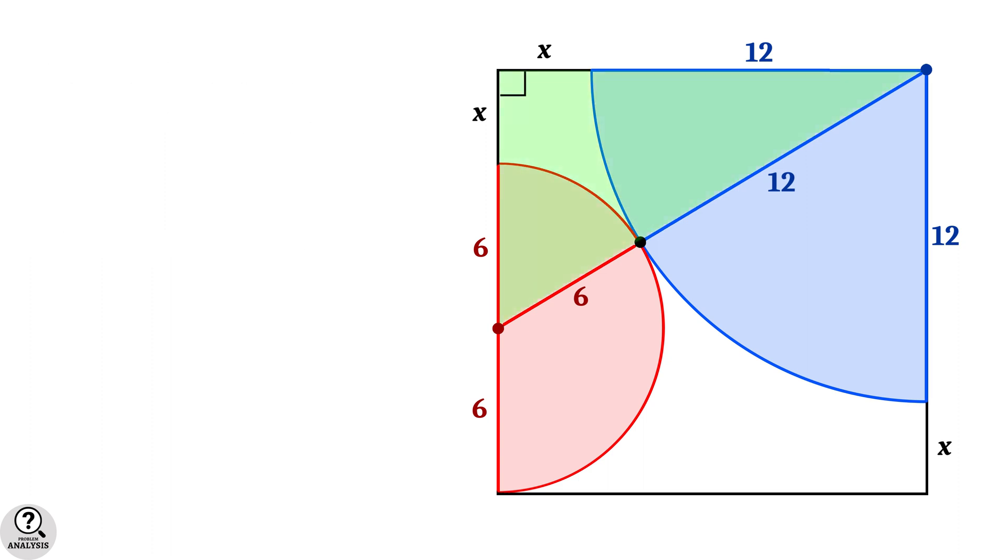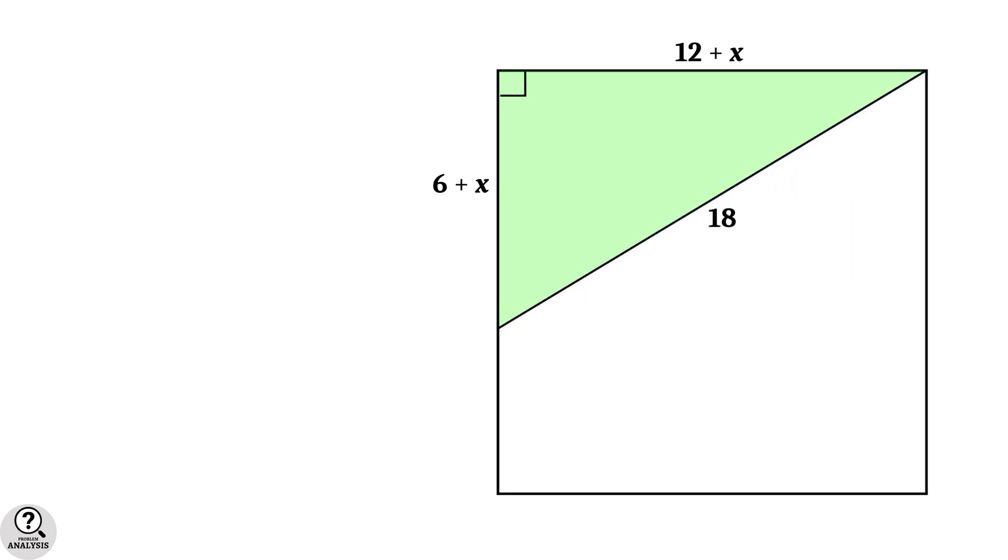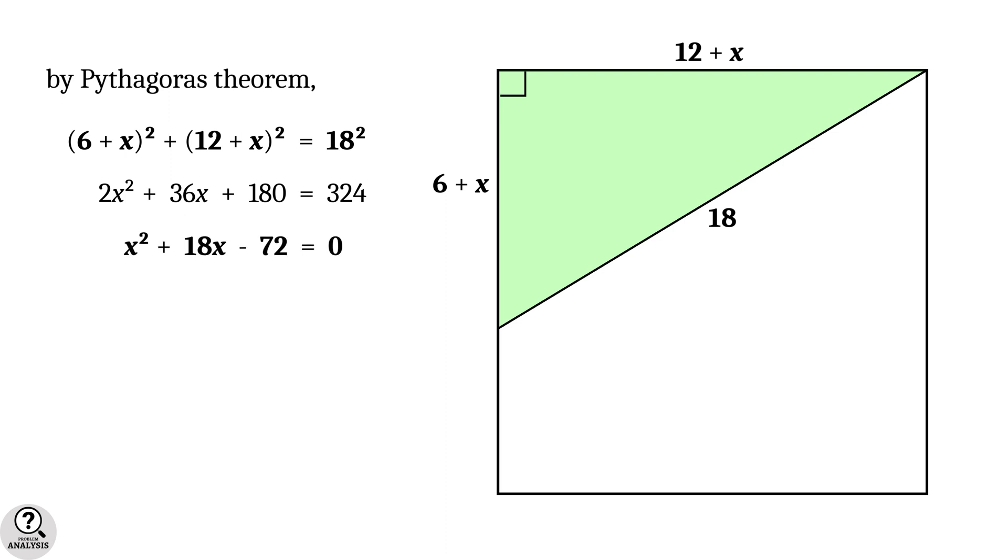Now we can see a right triangle here. Check the side lengths. The left edge equals 6 plus x, the top edge equals 12 plus x, and the hypotenuse equals 6 plus 12, which is 18 units. Apply Pythagoras theorem. This gives (6+x)² + (12+x)² = 18². Further simplification gives 2x² + 36x + 180 = 324, that is, x² + 18x - 72 = 0.